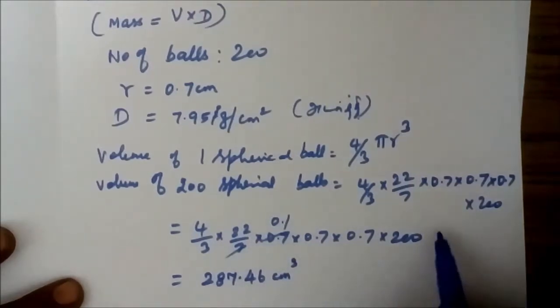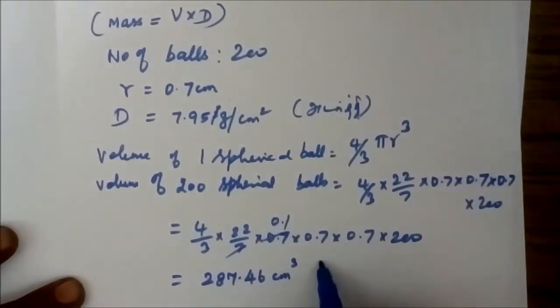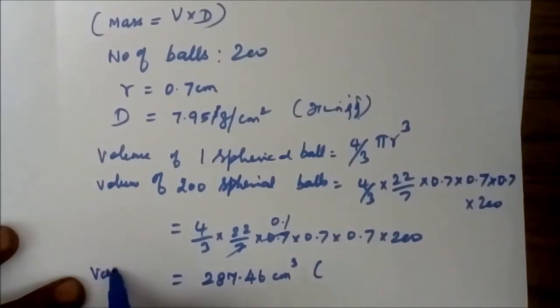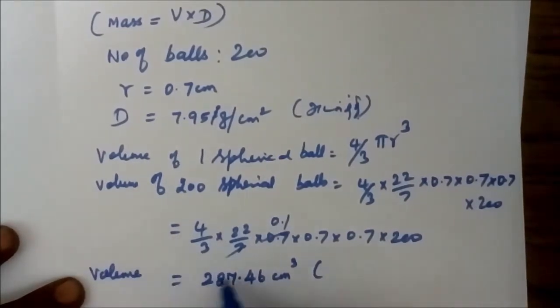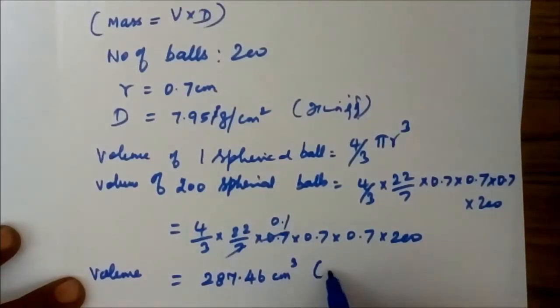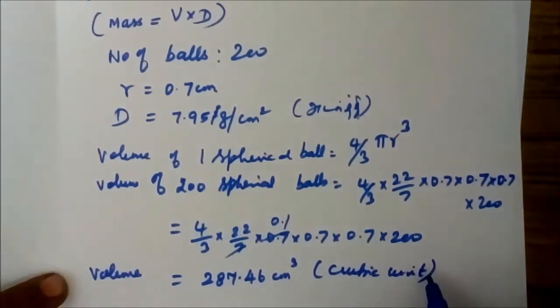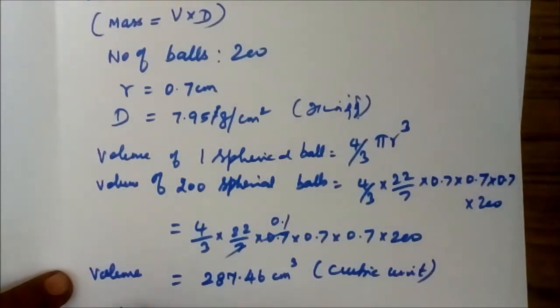This is the volume of 200 spherical balls: 287.46 cm³. This is the cubic unit. Area is the square unit, volume means the cubic unit.